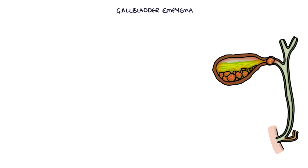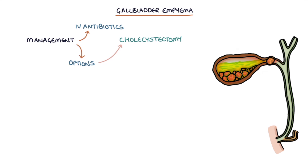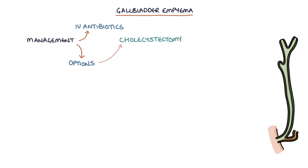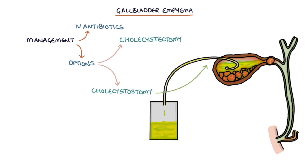Gallbladder empyema refers to infected tissue and pus collecting in the gallbladder. Management involves IV antibiotics and one of two main options: cholecystectomy with removal of the gallbladder, or cholecystostomy with insertion of a drain into the gallbladder to allow the infected material to drain away.